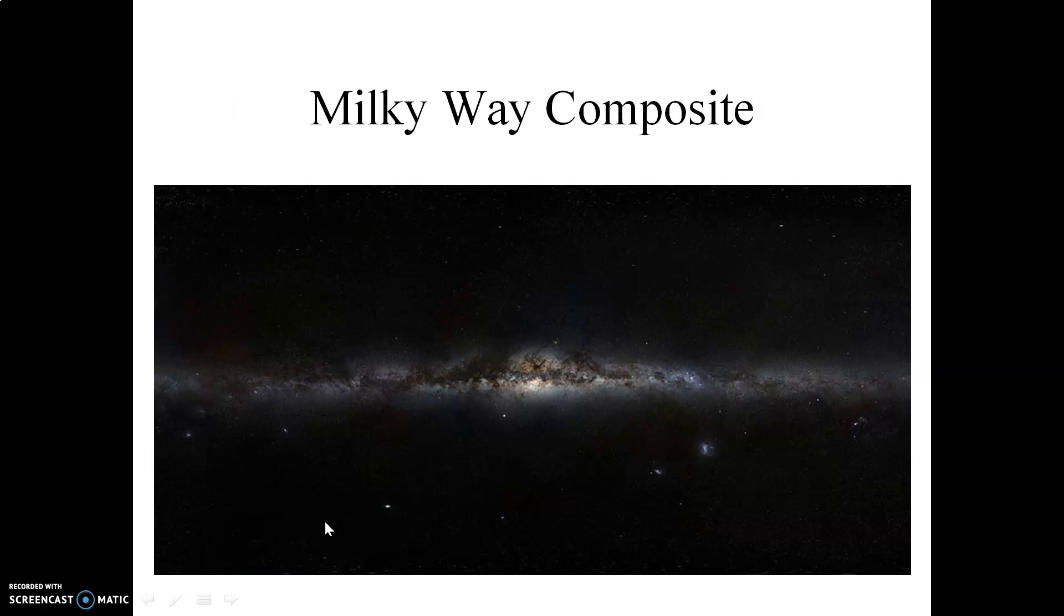Now moving forwards from there. This right here is a nice composite picture of the band of the Milky Way stretching across the sky. It's actually a 360 degree view, so this side of the photograph here is attached to this side of the photograph here. In order to take a photograph such as this, you would have to observe the band of the Milky Way over an entire year. Basically, you would see this portion of the Milky Way high in the sky in the summer months, and then you would see this portion here and this portion here high in the sky in the winter months.